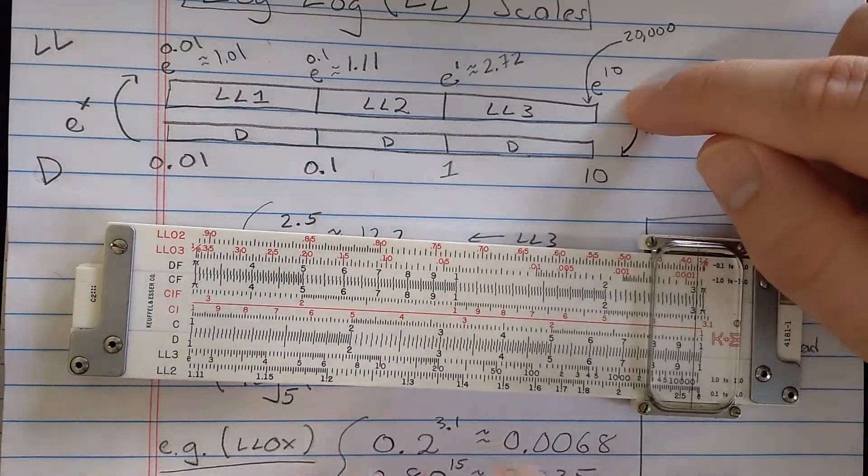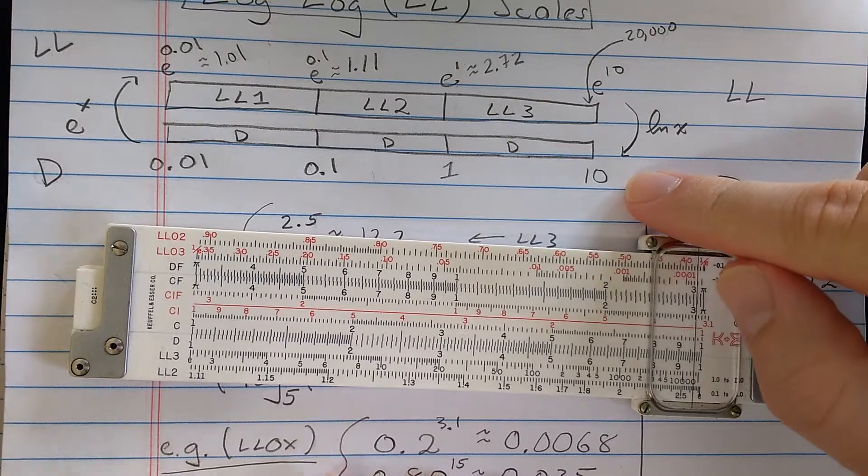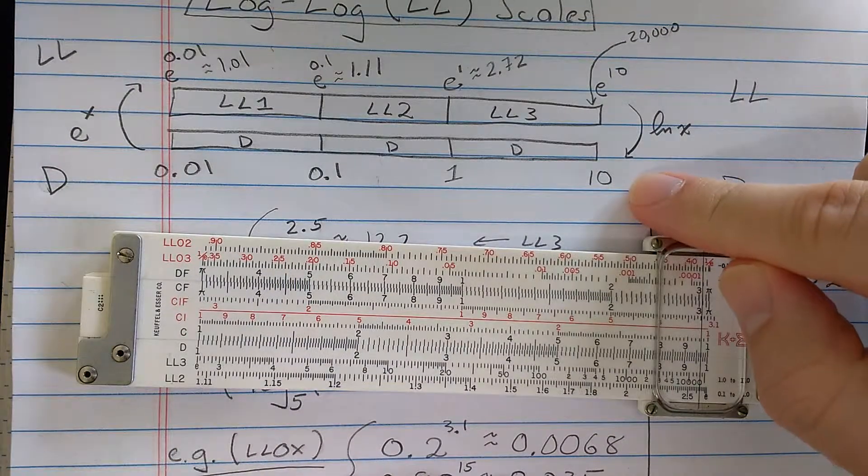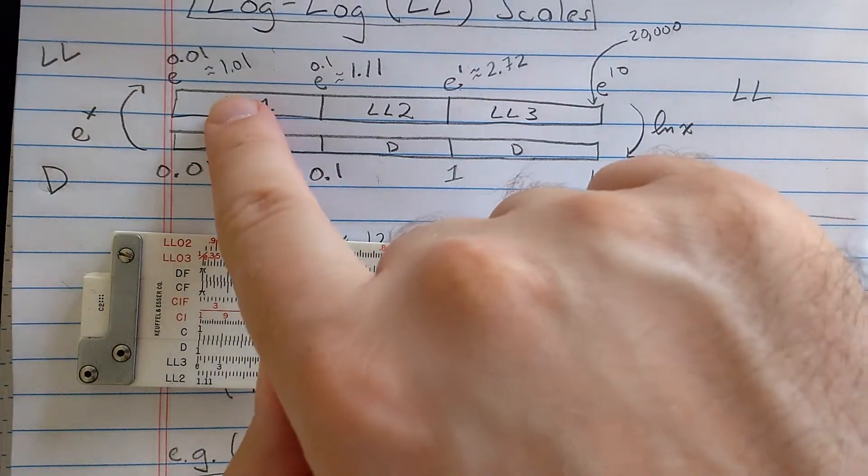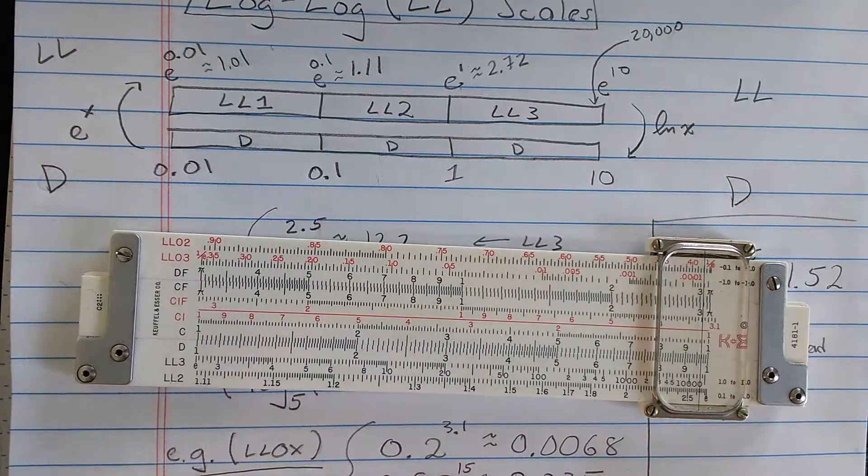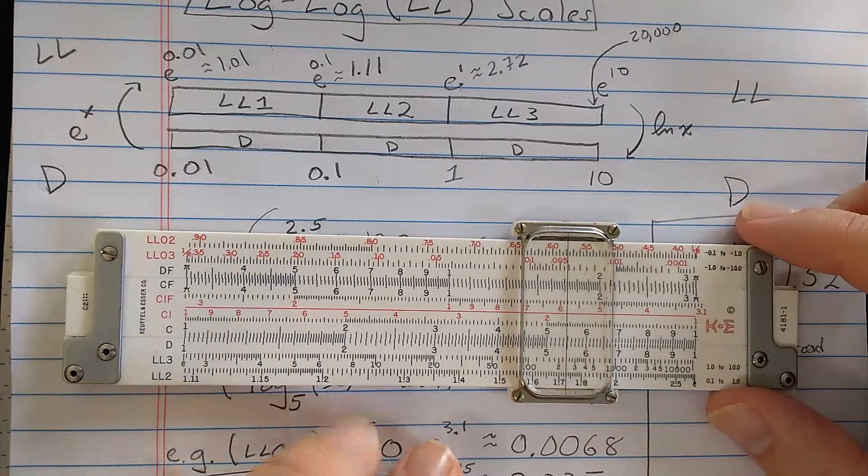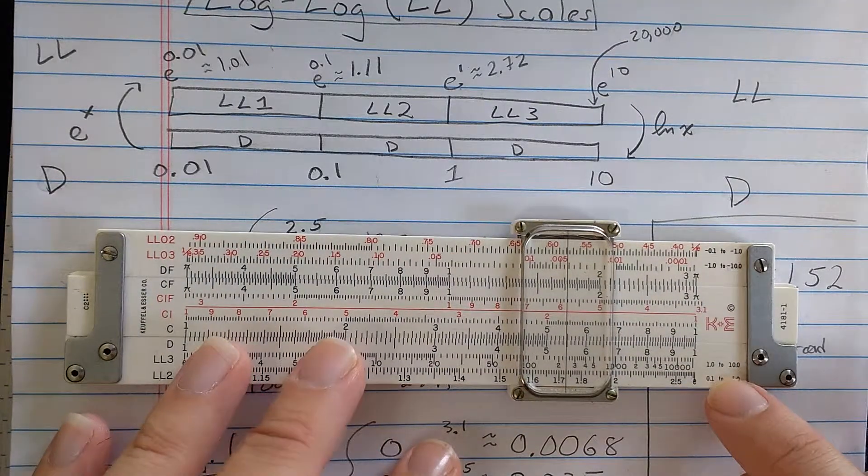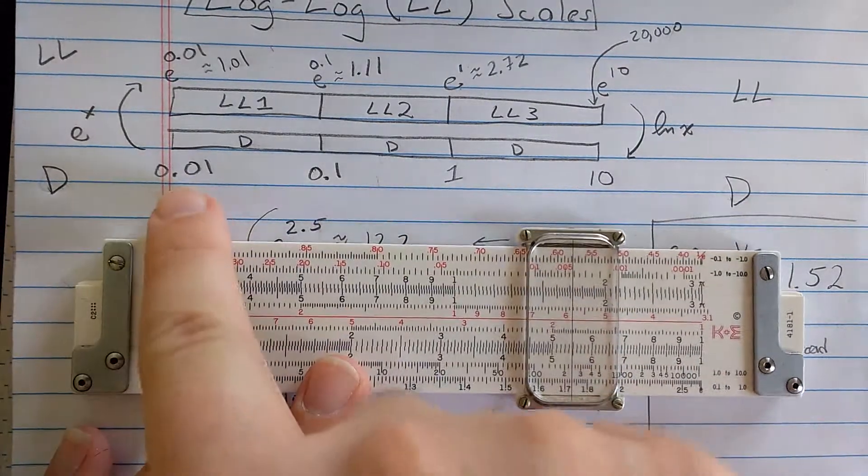If you read from the LL scale to the D scale, you read a natural log, and if you read from the D scale to the log-log scale, you compute E to the X, the natural exponential. You've got to remember that that X in both cases falls in the appropriate range.